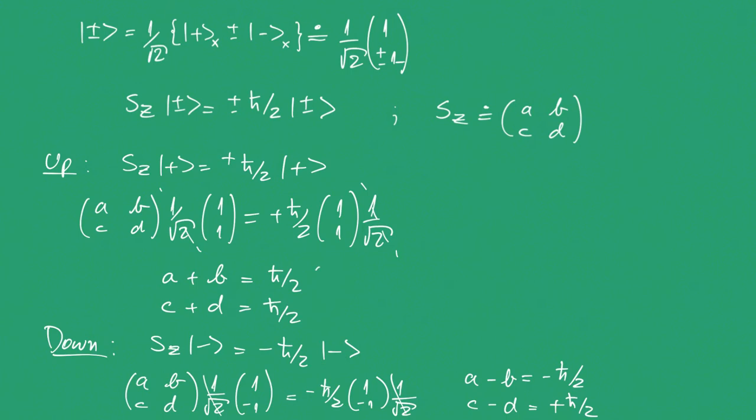Now, if we look at these two equations, we can find 2A equals 0, which means A must be 0. 2B equals H bar, which means B equals H bar over 2. So, if we look at these two equations, we have 2C equals H bar, then C equals H bar over 2, and D equals 0, which means D is 0.